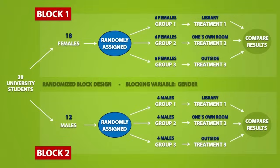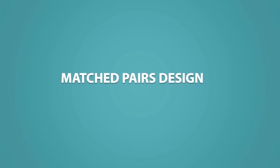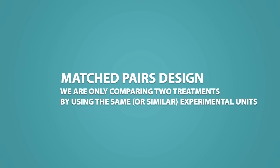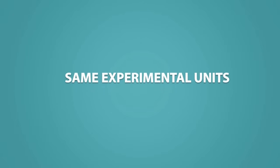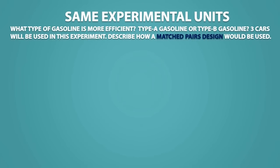The last type of experiment we'll talk about is the matched pairs design. In a matched pairs design, we are only comparing two treatments by using the same or similar experimental units. For example: what type of gasoline is more efficient — type A gasoline or type B gasoline?